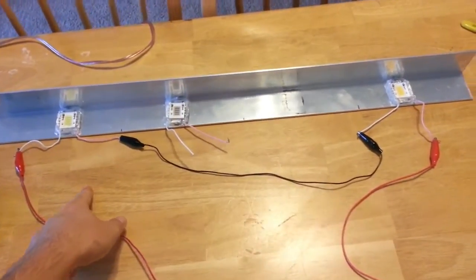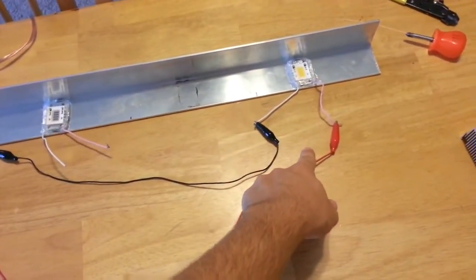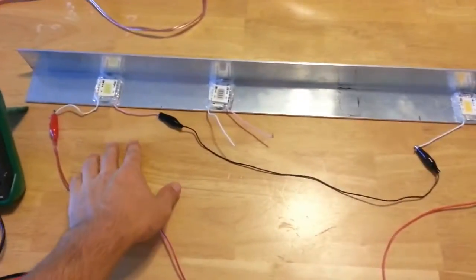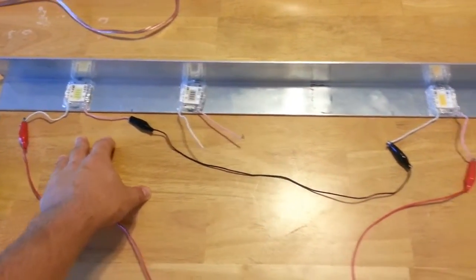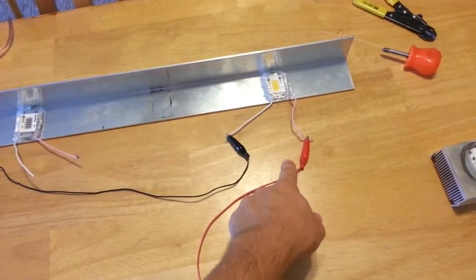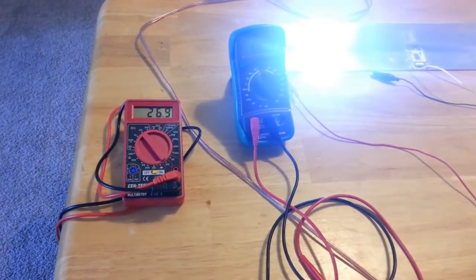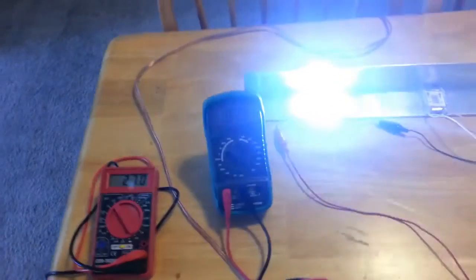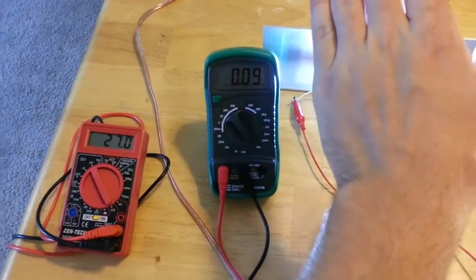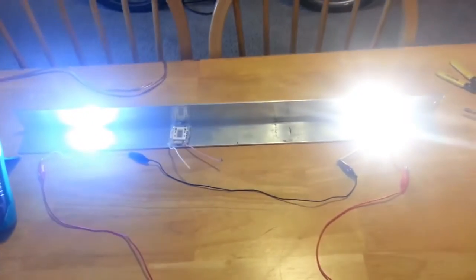I've connected this white LED in series with this white LED. This is a 6500K white and this is 3500K white, so they will be different colors. 27 volts, 100 milliamps, both are lit.